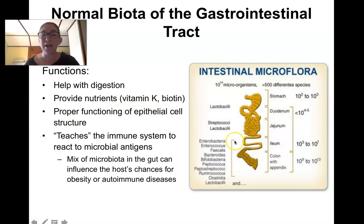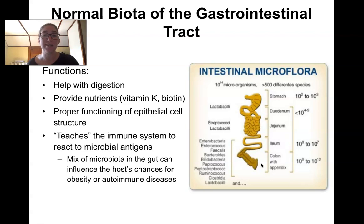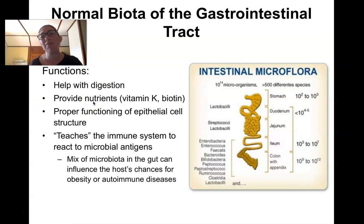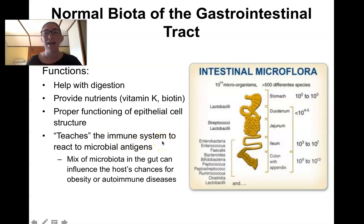The gut microbes also help with proper functioning of the epithelial cell structures. They digest soluble fiber and produce chemicals that make the intestines healthier. A lot of these functions were the hypotheses of scientists as to why we have gut microbes — oh, they must be providing beneficial services like helping us digest things or making vitamins, which they do. But it turns out that probably one of the most important roles of our gut microbes is actually in helping to train the immune system.